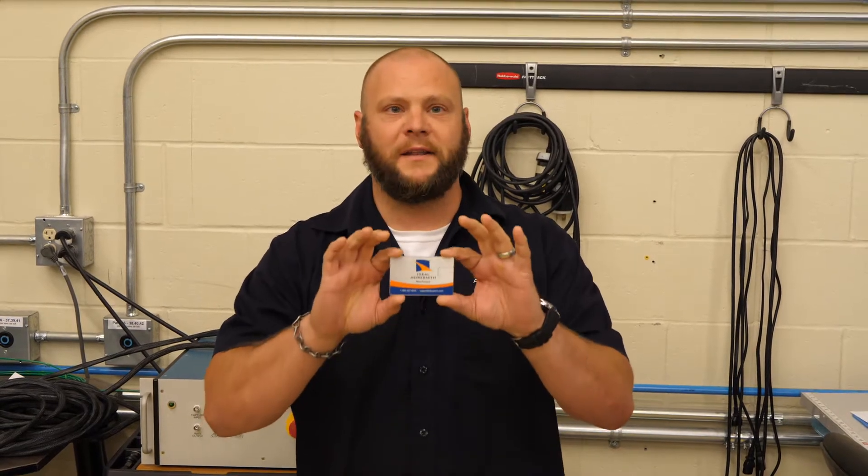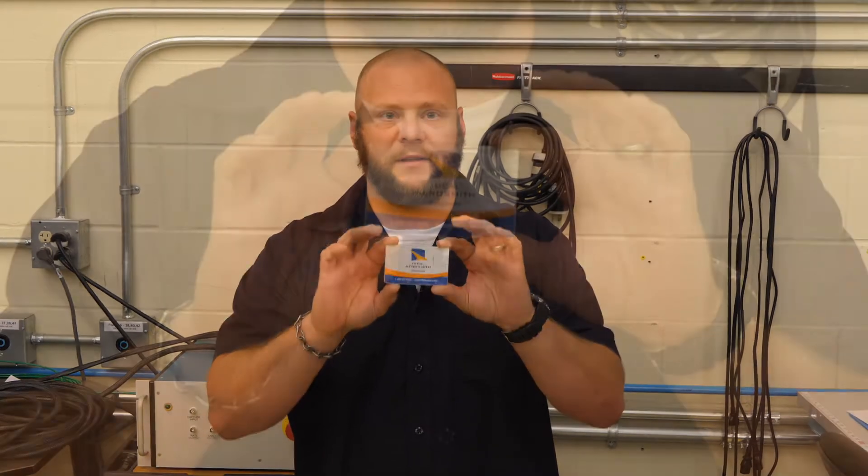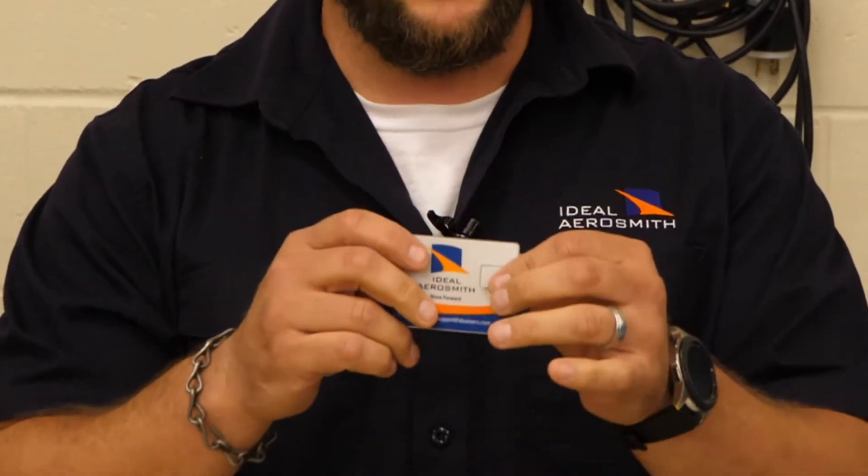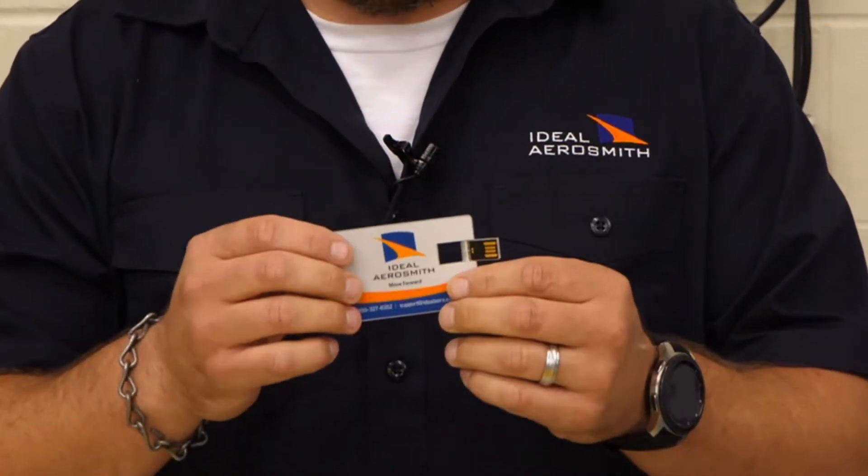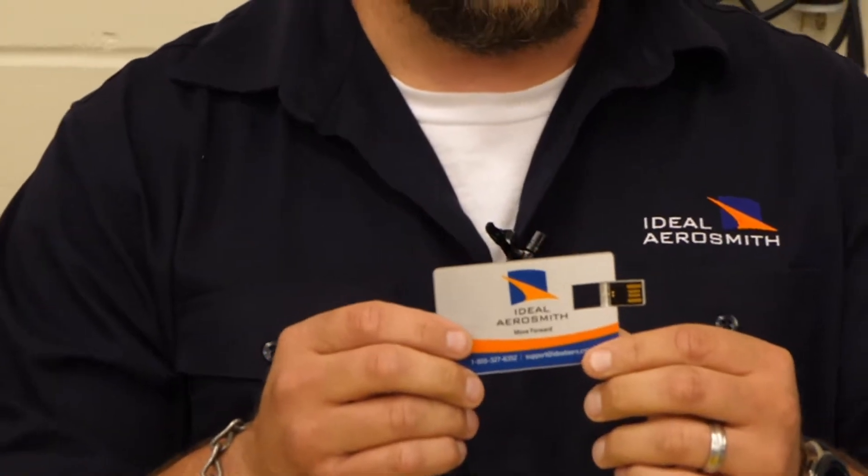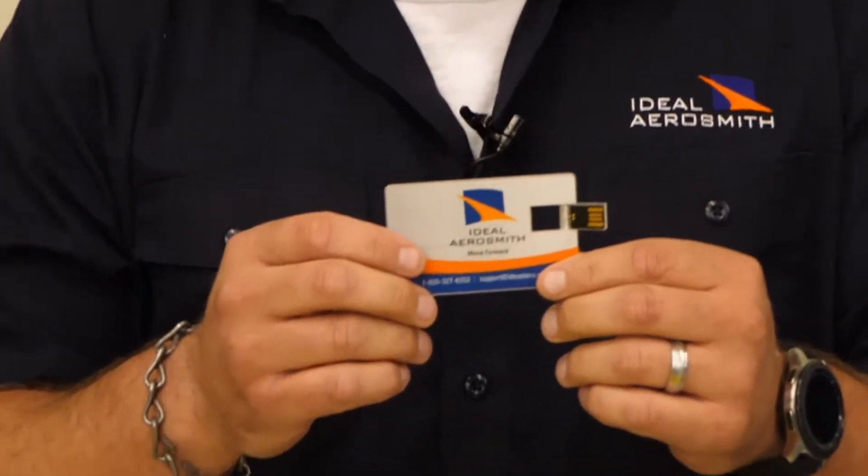The first thing you'll do is find this Ideal Aerosmith business card USB drive. Along with your manuals, this drive will also include a copy of Ideal Host Lite, which is a simple program that we use for operating and running the rate table.